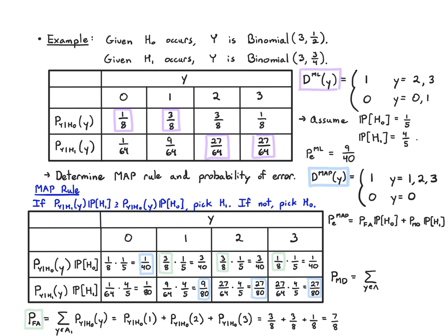For misdetection, I'm just summing up over this one entry where I'm deciding H₀. That's going to be this 1 over 64 term. So I'm just getting 1 over 64.